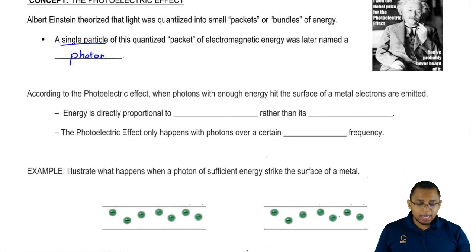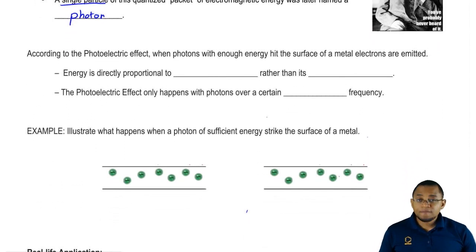According to Einstein's photoelectric effect, when photons with enough energy strike the surface of a metal, they'll be able to knock electrons off of the surface of the metal. In that way, we use the word emitting. The metal is emitting electrons. Electrons are coming off the surface of the metal.